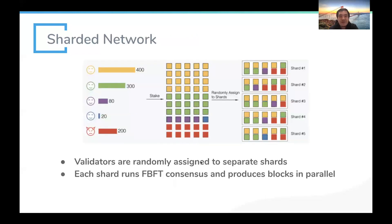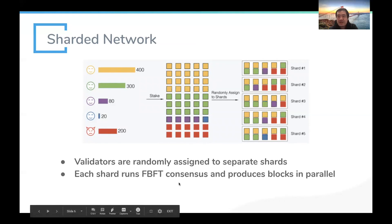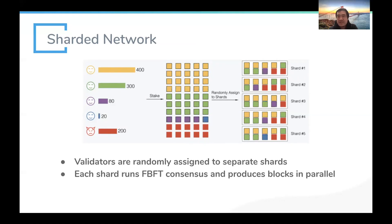For network sharding, we use randomness-based sharding — all validators are assigned to each shard based on a random number, which guarantees the security of the network. After validators are sharded into each shard, they form a complete committee for that shard, and each committee runs FBFT consensus in parallel, producing blocks in parallel.